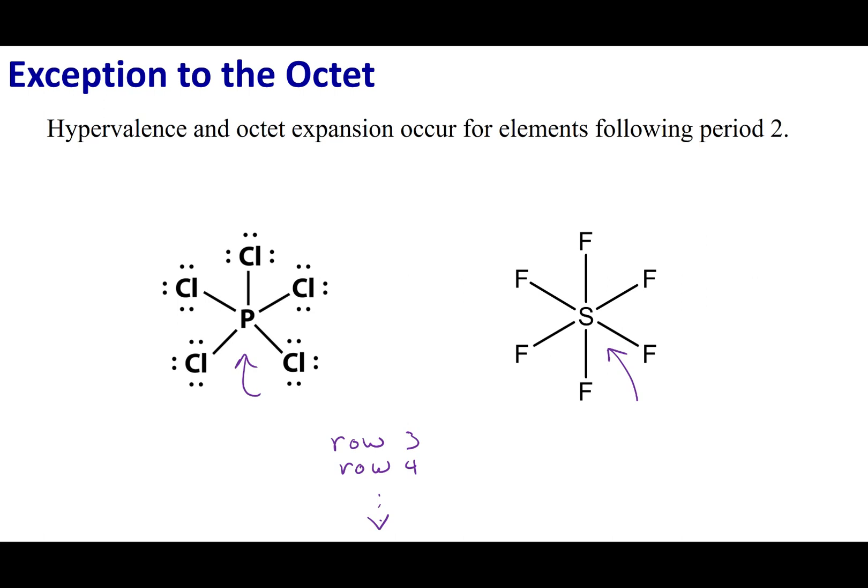These Lewis structures match what we see. Again, I want to reiterate this rule: just because something can expand its octet doesn't mean it will. The only reason you're going to go hypervalent is if you have to and it minimizes formal charge.